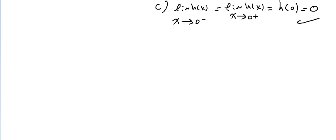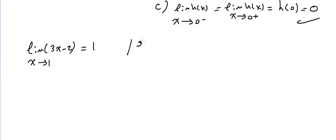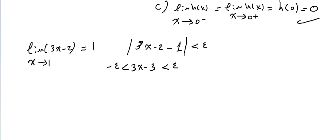Let's do another one. Given that the limit of 3X minus 2 as X approaches 1 equals 1, find the value of Delta corresponding to epsilon (a small positive value). We set up: the absolute value of (3X minus 2) minus 1 less than epsilon, which gives minus epsilon less than 3X minus 3 less than epsilon.